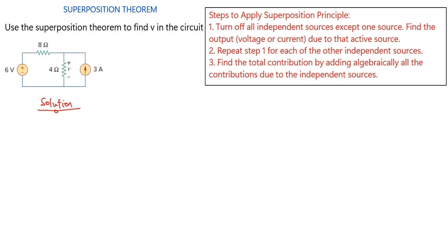First of all, we are going to consider the 6 volts source acting alone. So I'm going to redraw the circuit. Since we have a current source in the circuit, we need to open-circuit it. If you have a current source, you have to open-circuit it, and if you have a voltage source, you have to short-circuit it.